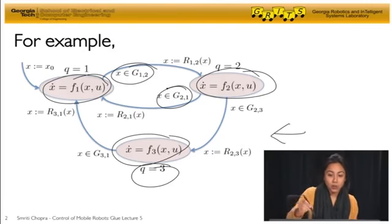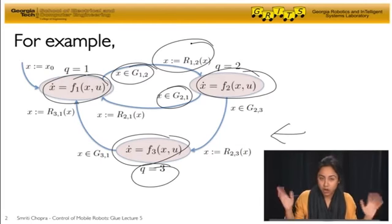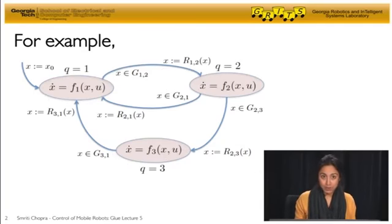Pretty simple. And then we have what we call resets, which is basically once you do switch to a different mode, do you change your state in any way or not? It's just something you can add into the automata. So this is a simple example of what a hybrid automata looks like.